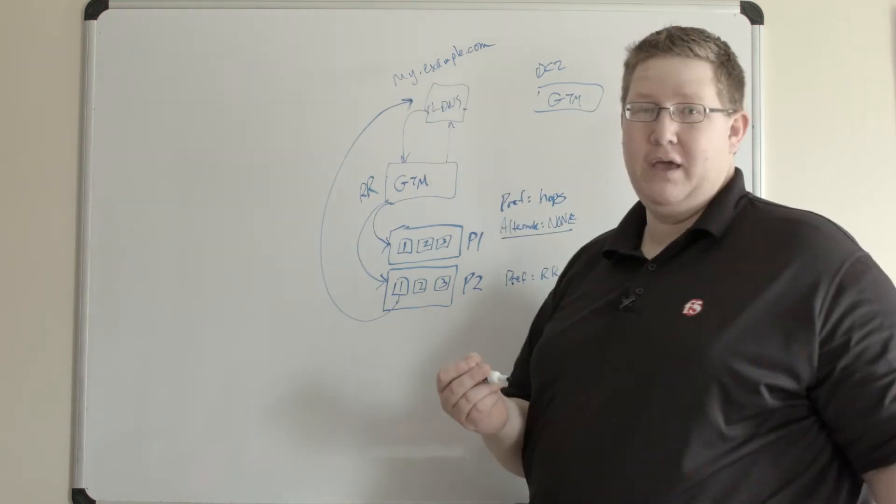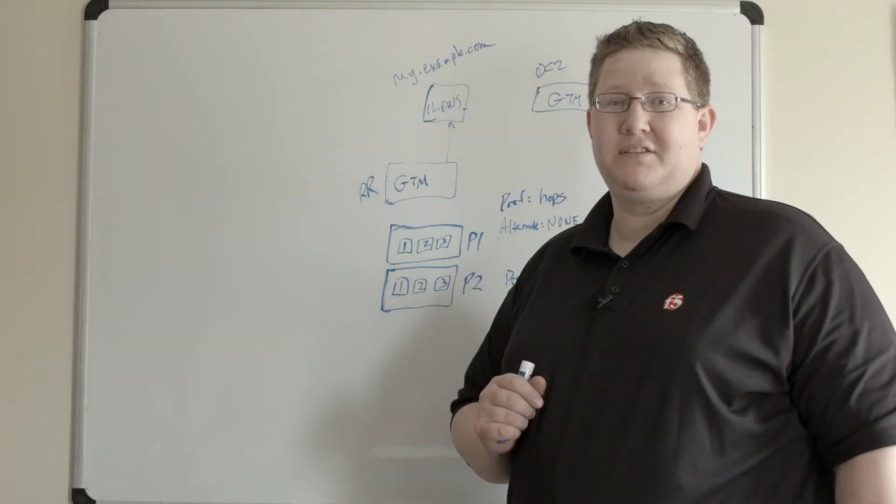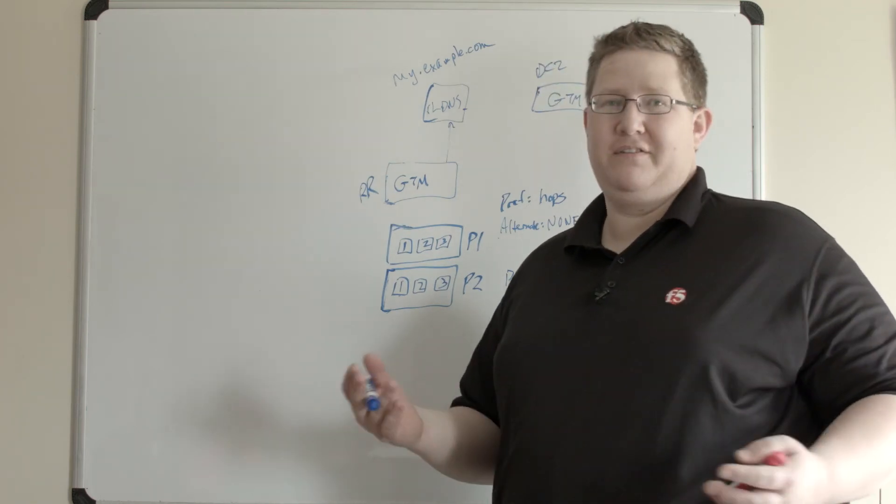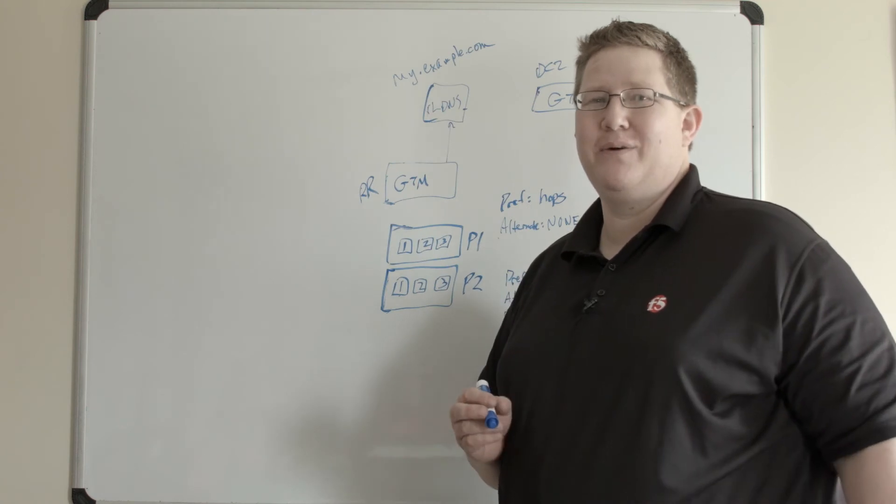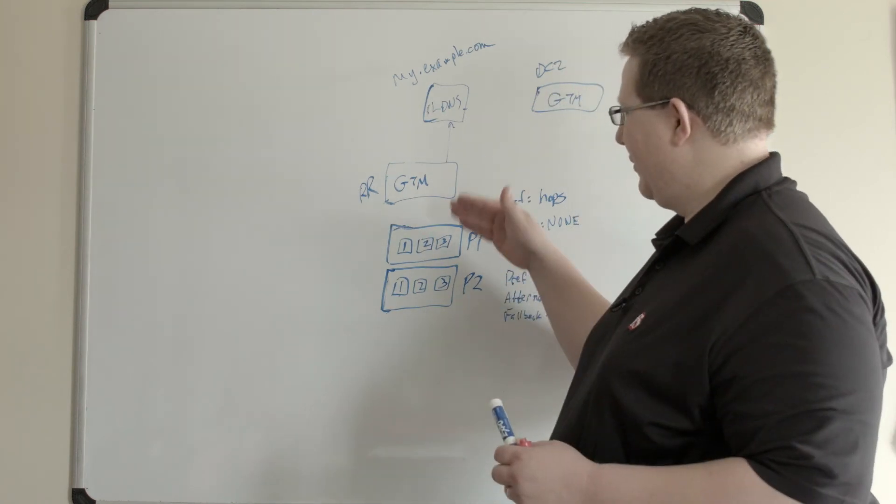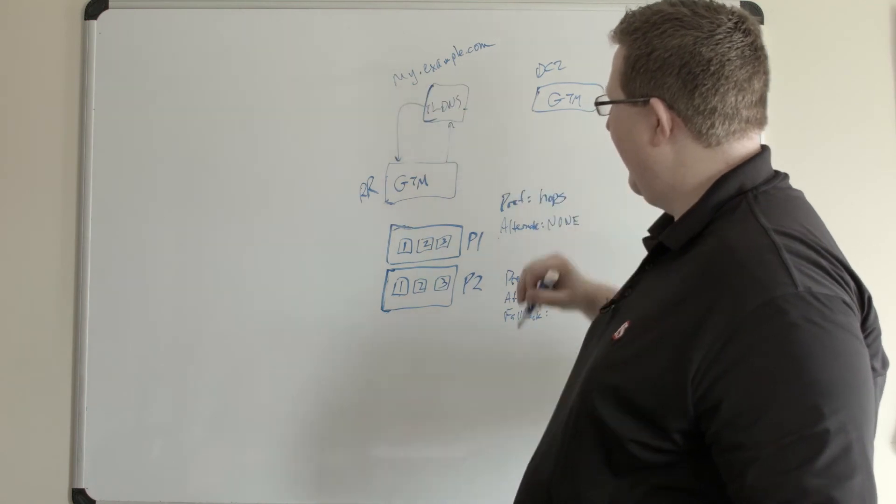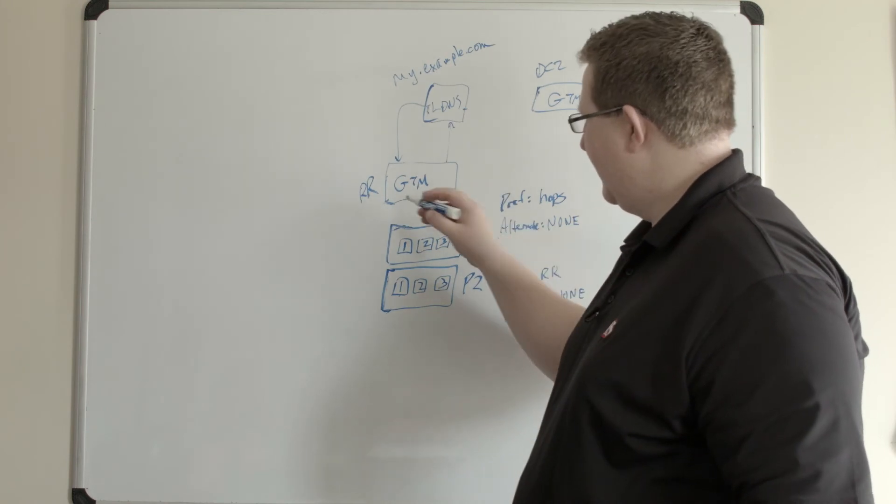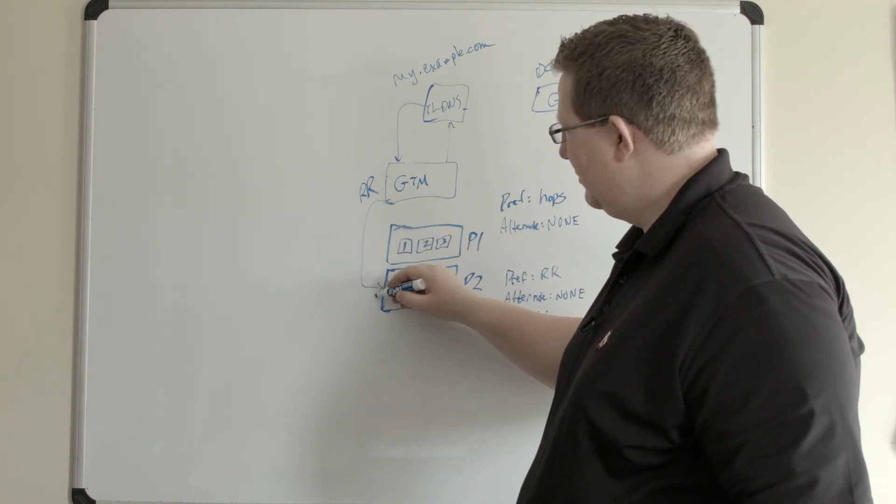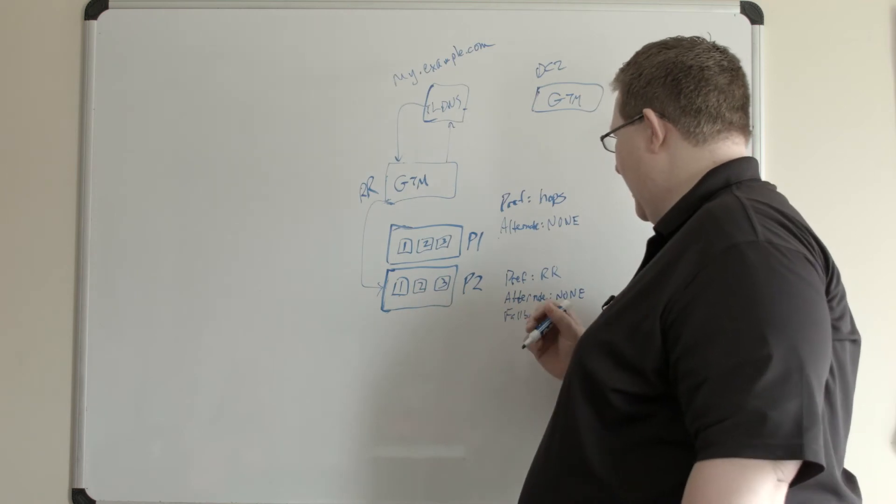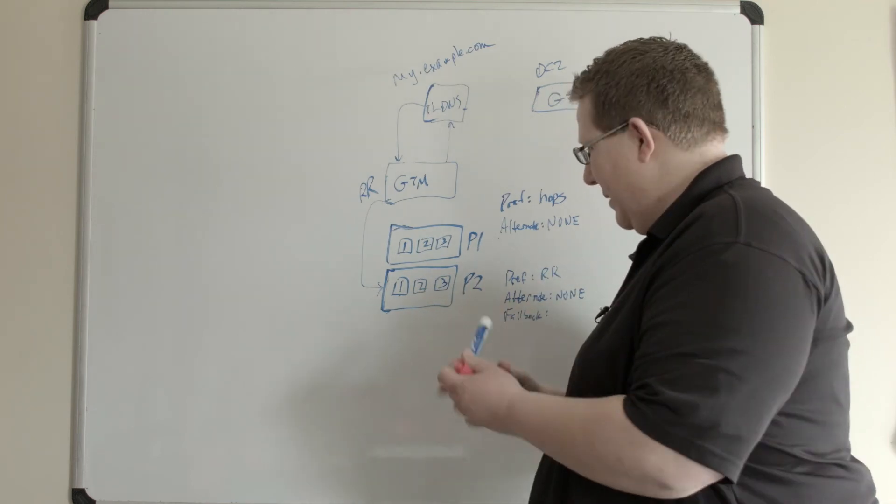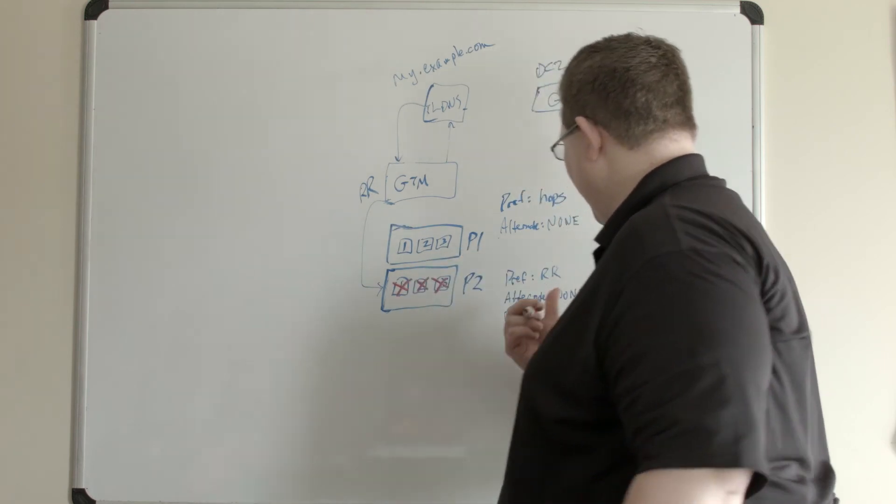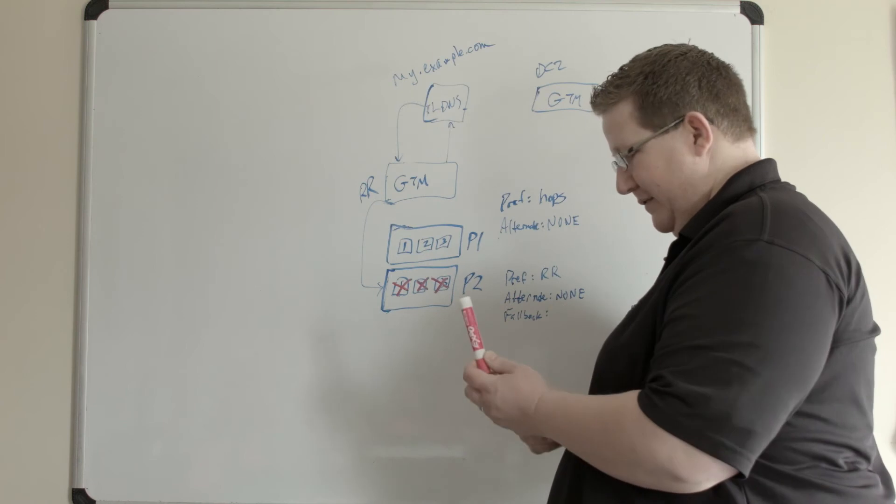Another option we have as a static algorithm at the pool level is fallback IP. What that's useful for is disaster recovery scenarios where you've worked through your pools. We'll give another example here where round robin, LDNS makes a request for myexample.com. Round robin comes down here to pool two and pool two's configuration is I'm going to do a round robin, but at this point these are all down. I don't have an alternate, I say none on alternate, and I come back to fallback.